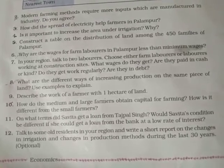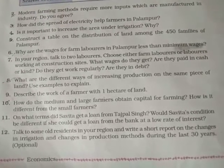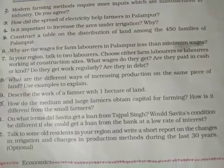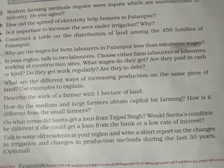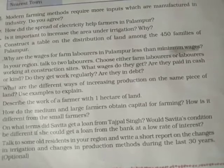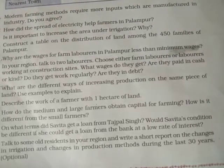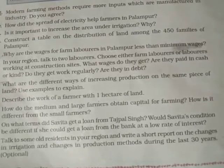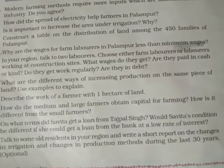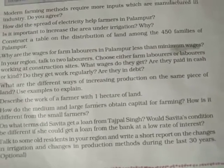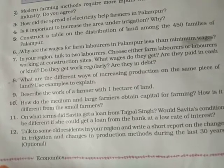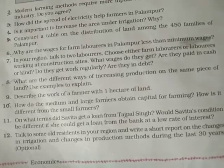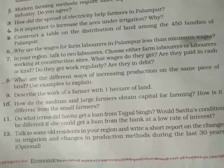Question ten: How do medium and large farmers obtain capital for farming, and how is it different from small farmers? All farmers require fixed and working capital. Medium and large farmers have their own savings from farming — they sell their surplus in the market, save a part, and use the rest to buy machinery, raw materials, or lend to small farmers. Small farmers, however, must borrow money from large farmers, money lenders, or traders who supply inputs, and are charged very high rates of interest.